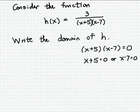And then we can just solve these two simple equations for x. Of course, this one we can solve just by subtracting 5 from both sides of the equation, so we get x equals minus 5. Or the second equation, even easier to solve, we can solve that by adding 7 to both sides of the equation, and so we get x equals 7.